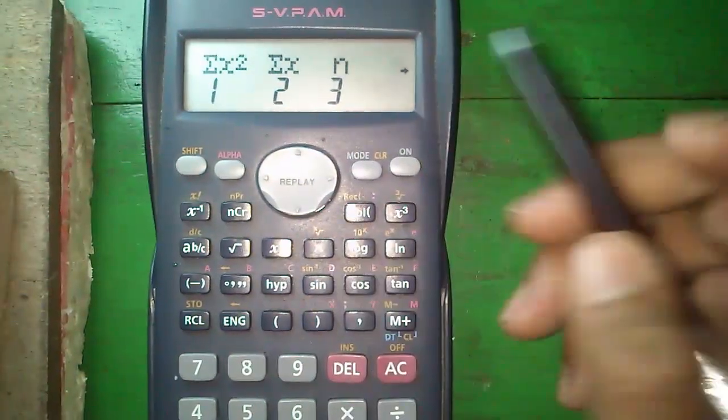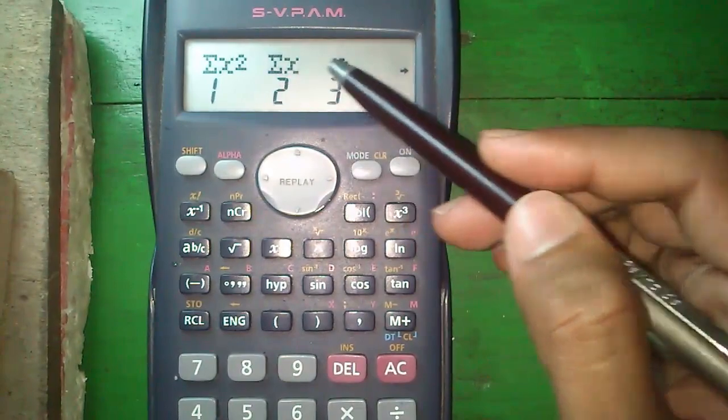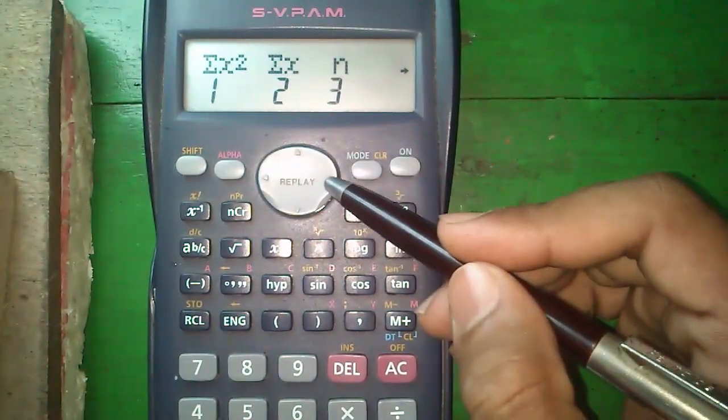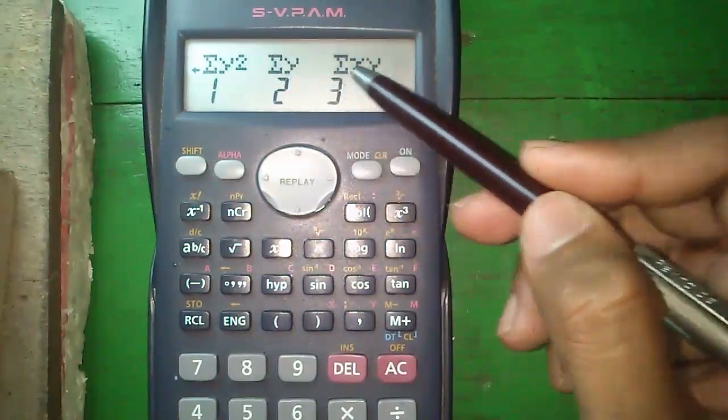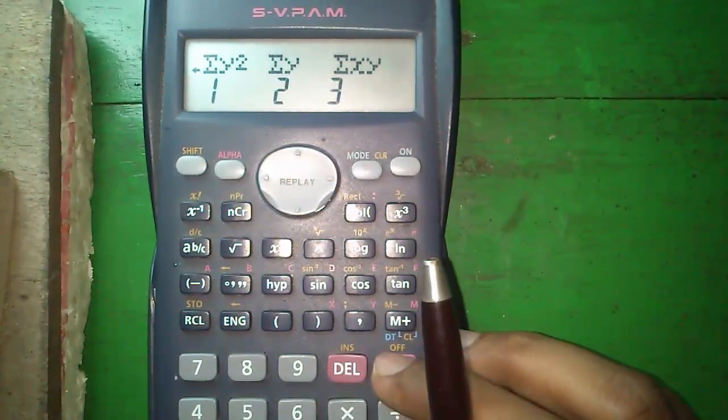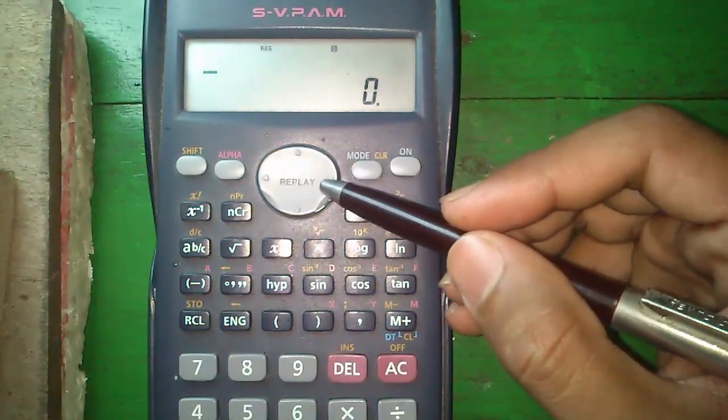Another mode, press Shift and 1. Here is the summation mode. The summation of all X square values, summation of all X values and third, number of samples, summation of Y square values, summation of Y values and summation of X into Y values. You can use these modes accordingly. I will make tutorials on the next modes in future.